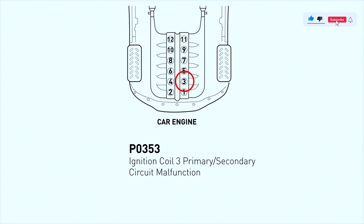First things first, let's understand what the P0353 code really means. Your car's ignition system relies on ignition coils to convert the battery's voltage into a high-voltage spark. The P0353 code specifically refers to the third ignition coil, which is labeled as C in the firing order. If the engine control module — ECM — detects a problem in the electrical circuit of this coil, it triggers the P0353 code.